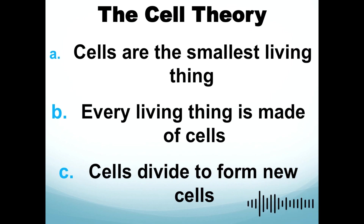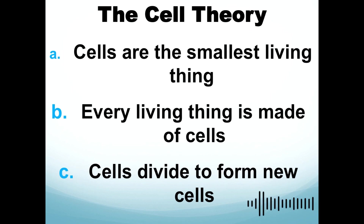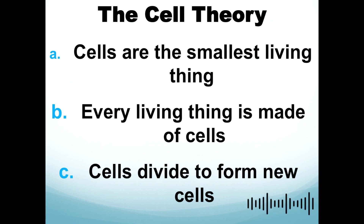Plants, animals, and humans are all made up of cells. Additionally, cells divide to form new cells — this means there is reproduction, such as undergoing mitosis. These are the key points of cell theory.